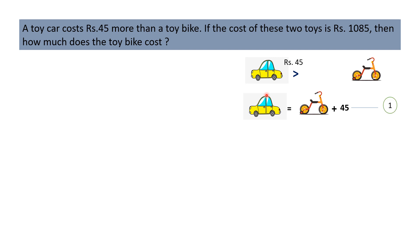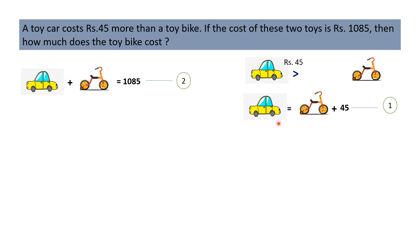Now let's move to the second part of the question. The cost of these two toys is Rs.1085. It means cost of the toy car plus cost of the toy bike is equal to Rs.1085. This is equation number 2. From equation number 1, cost of the toy car equals cost of the toy bike plus Rs.45. So in equation number 2, we can write bike plus Rs.45 in place of car.